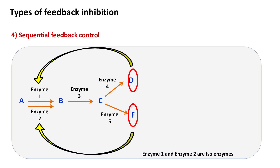Number 5: Isoenzyme control. Isoenzymes are enzymes that catalyze the same reaction but differ in their control characteristics. Because they differ in their control characteristics, isoenzymes can be controlled by different end products. For example, in this case, end product D inhibits isoenzyme 1, whereas end product F inhibits isoenzyme 2.